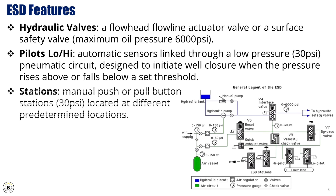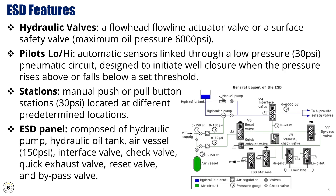Stations consist of manual push or pull button stations at 30 PSI, located at different predetermined locations. The ESD panel is composed of a hydraulic pump, hydraulic oil tank, air vessel at 150 PSI, interface valve, check valve, quick exhaust valve, reset valve, and bypass valve.